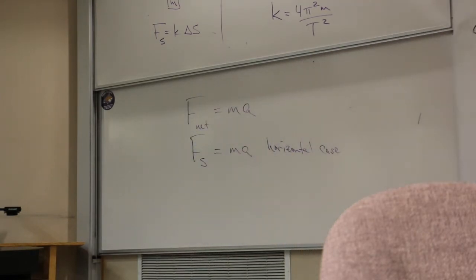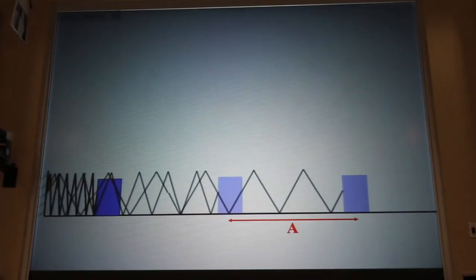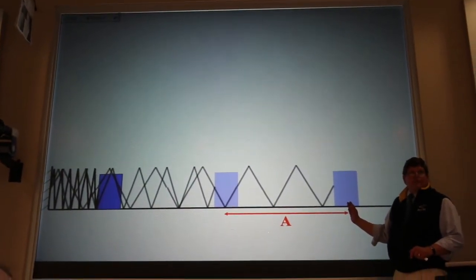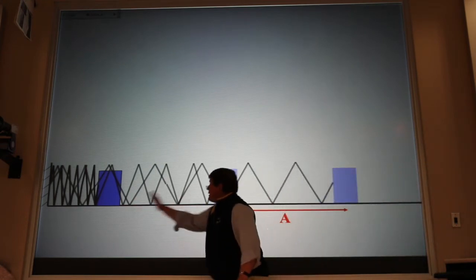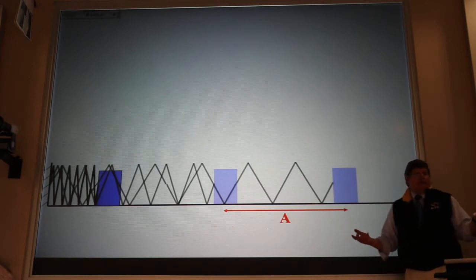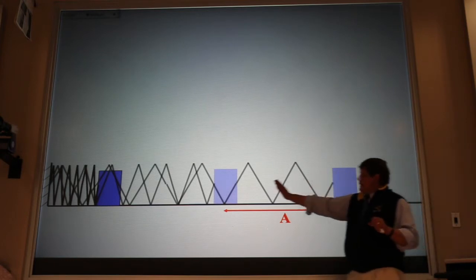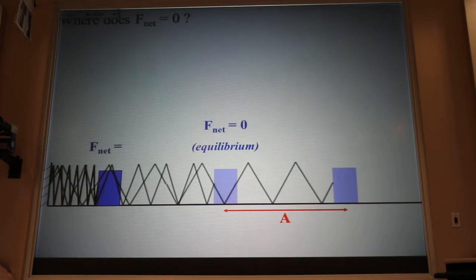If that spring, when it came from the factory, is exactly that long, if I attach this block to the spring and just set the block there, it's going to stay there because the spring is neither stretched nor compressed. We call that equilibrium. The furthest distance we get away from equilibrium, the turnaround point, we call the amplitude. If I were to pull this block out this distance a and let go, this thing would go boing forever if we had a frictionless surface. The net force is equal to zero when the spring is neither stretched nor compressed. And that's where the acceleration would also be zero.